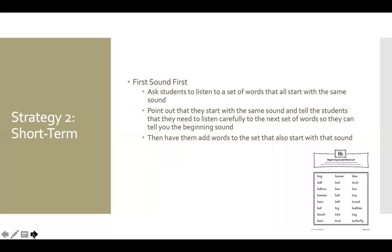The second strategy is called First Sound First and allows students to work with beginning or initial sounds. This is a short-term activity used until students have grasped the idea of initial sounds, after which you move on to ending or medial sounds. You ask students to listen to a set of words that all start with the same sound, point out that they all share that sound, and ask students to listen carefully to identify that beginning sound. After identifying it, students shout out or are called on to provide more words that start with the same sound to add to the list.